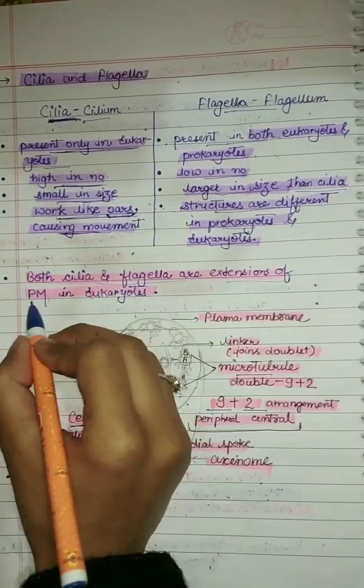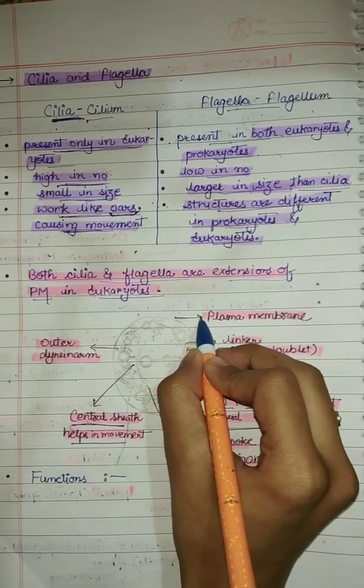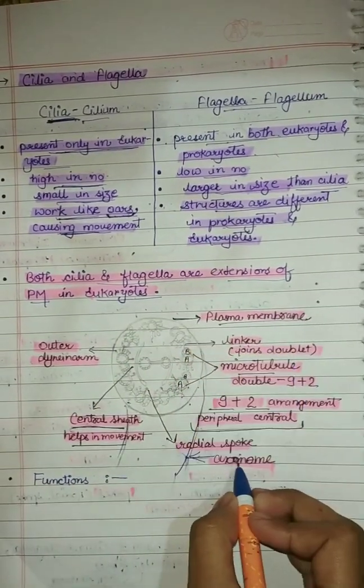Both Cilia and Flagella are extensions of the plasma membrane in eukaryotes. This is the structure of a transverse section of Cilia and Flagella. The outer membrane is plasma membrane, and the core is known as axoneme.